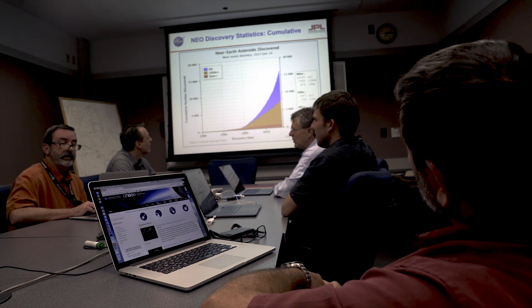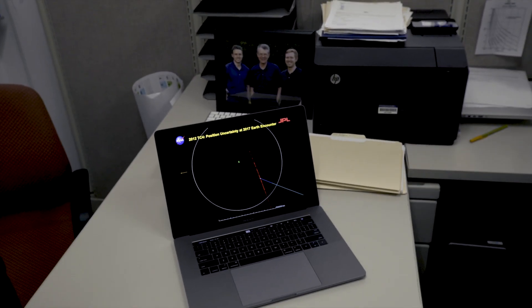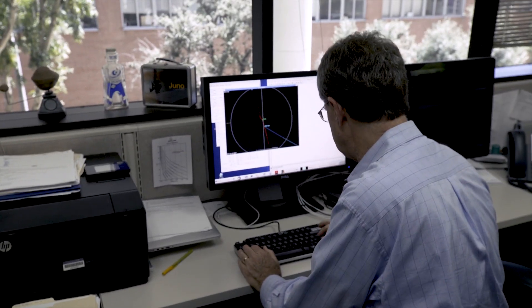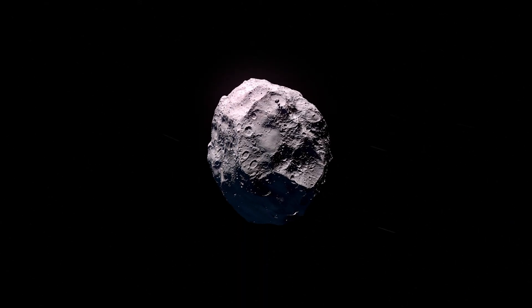CNEOS is also an early warning system for newly discovered asteroids. We take the early data and we compute whether or not that asteroid could hit the Earth. If there's a chance, we'll send out an early warning and alert for follow-up observations so that we can get more data and then we would know whether it can hit the Earth or not.